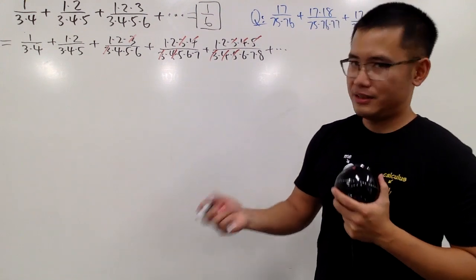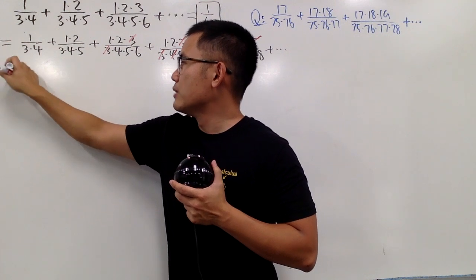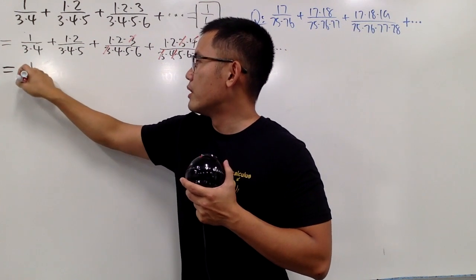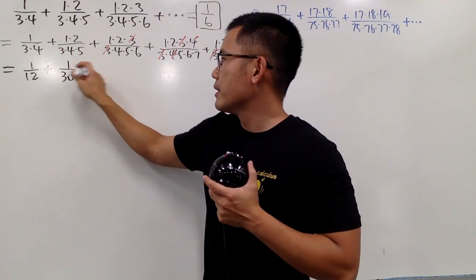So now, let me just take care of that. I'm going to leave these two. I'm just going to leave these two out. So this is, of course, one over twelve plus two over sixty. Of course, that will be one over thirty plus.